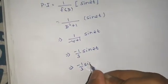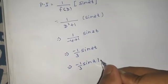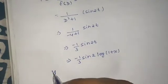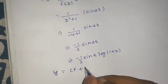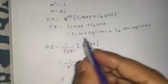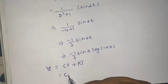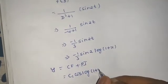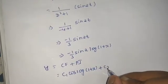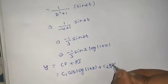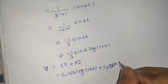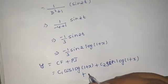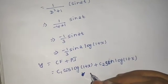Which in terms of x we can write as sin(2) - and we can replace this t by log(1+x). So I can write my final answer as CF + PI. Both I have changed in terms of x, which is CF was c₁cos(log(1+x)) plus c₂sin(log(1+x))...